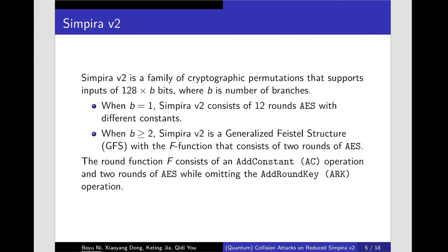Next, we introduce the definition of Simpira v2. Simpira v2 is a family of permutations that support inputs of 128 times b bits, where b is the number of branches.